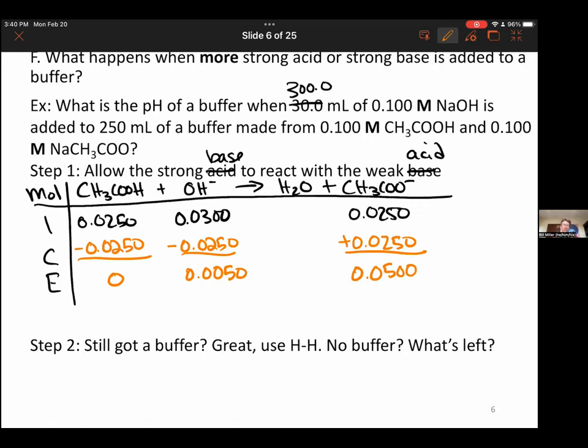After you do the reaction, you ask: step two, still got a buffer? Great, use Henderson-Hasselbalch. But we do not have a buffer because there is no weak acid. In order to have a buffer, you need both a weak acid and its conjugate weak base. We have a strong base and a weak base.